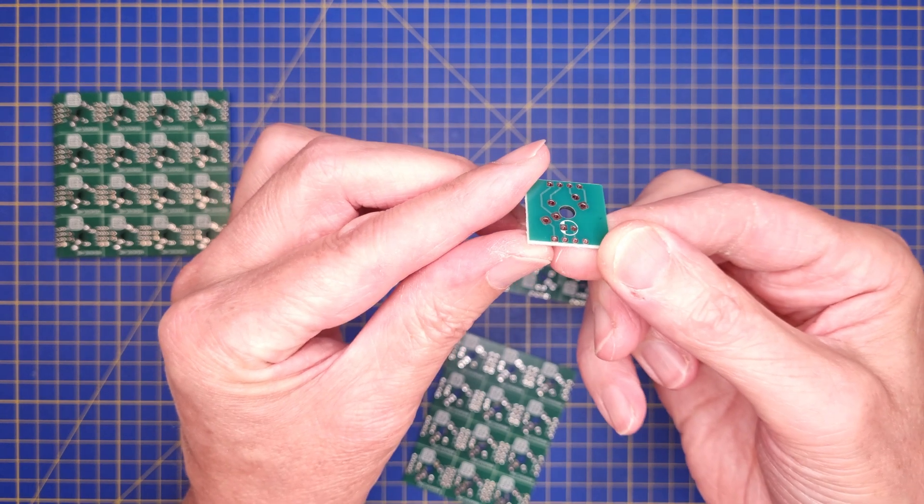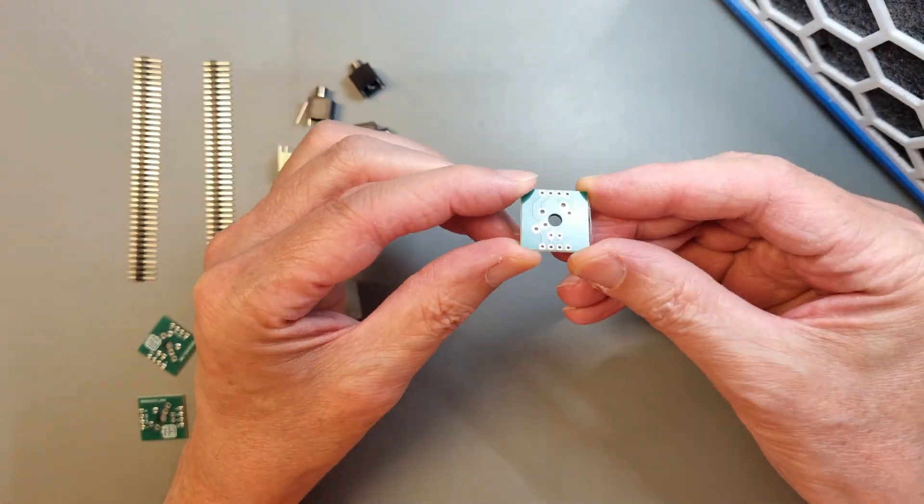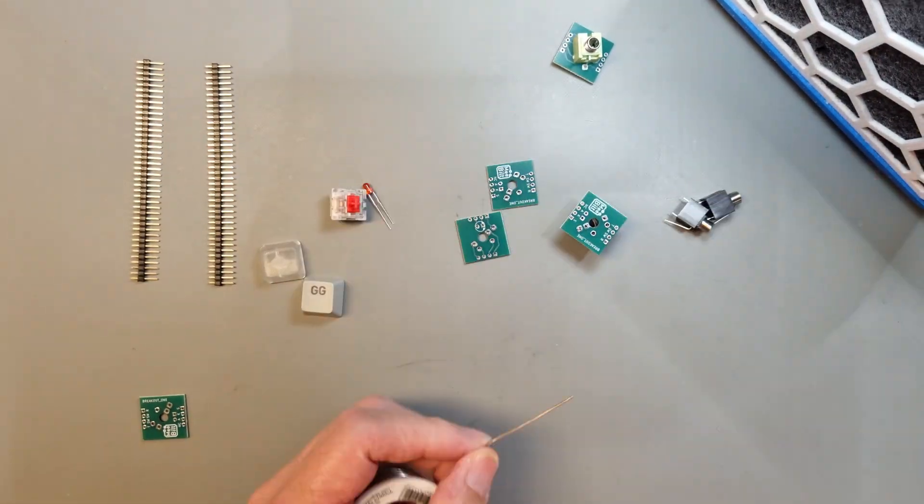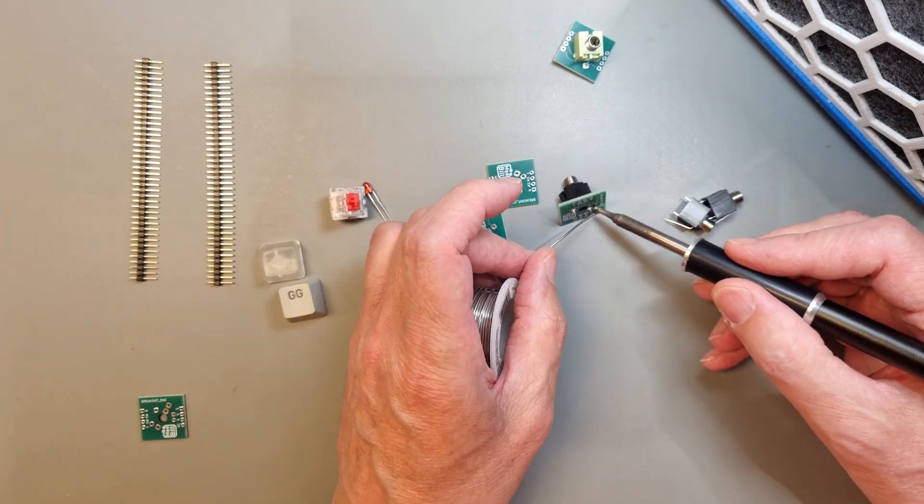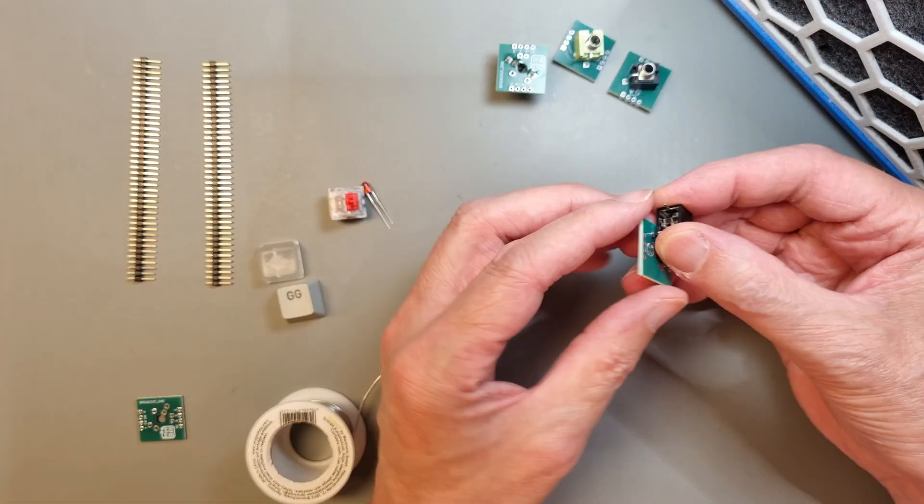A panel consists of 16 small PCBs, so that will be enough for a while I think. So, the first one is called Breakout 1 and adds provisions for a cherry key with an LED, and three and a half millimeter mono and stereo jacks.